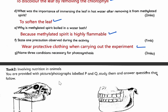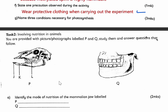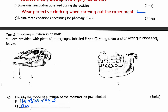Task two involves nutrition in animals — also grade 9 work. We are provided with photographs labeled P and Q. Study them and answer the questions that follow. Part A asks: identify the mode of nutrition of the mammalian jaw labeled P. In jaw P, you can see the incisor, a toothless gap, and the upper jaw has no teeth. Therefore, the mode of nutrition for this mammal is herbivorous. What about Q? This is the jaw of a human being; therefore the mode of nutrition is omnivorous. We score those two marks.